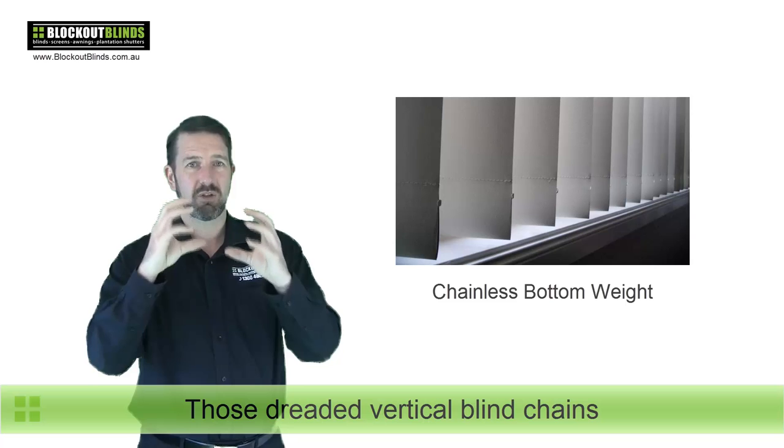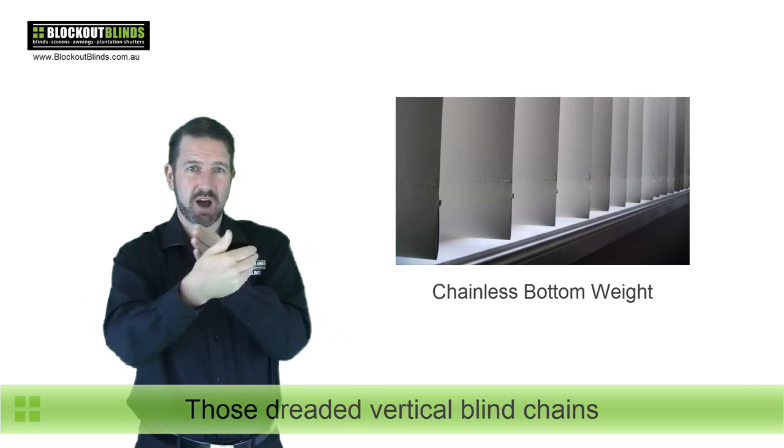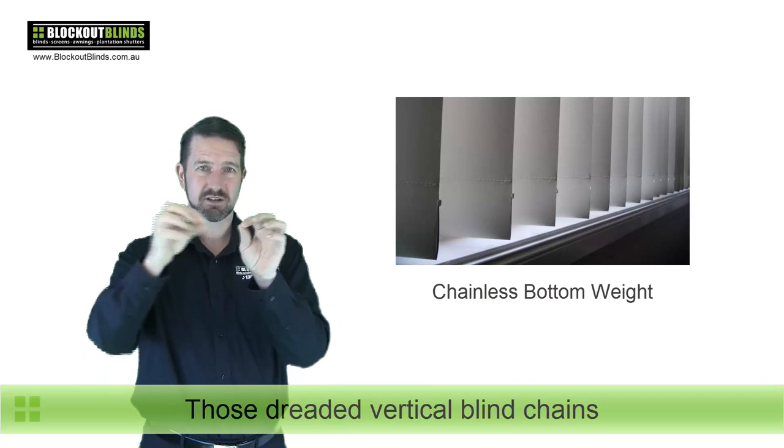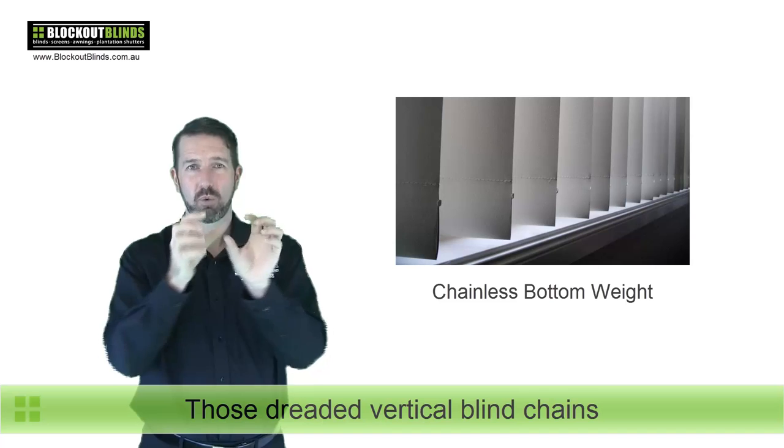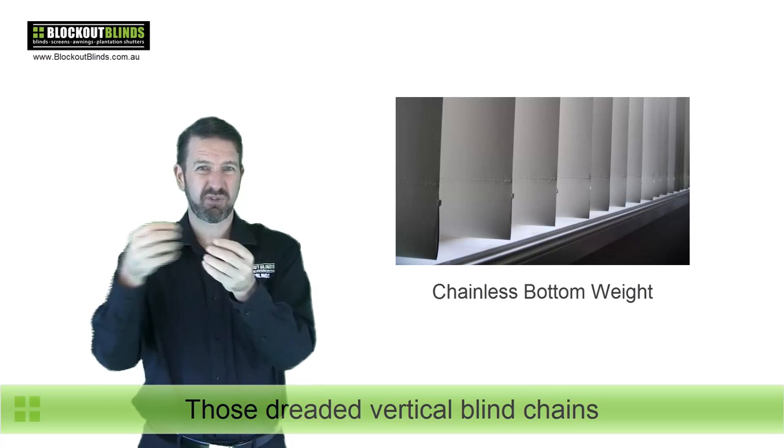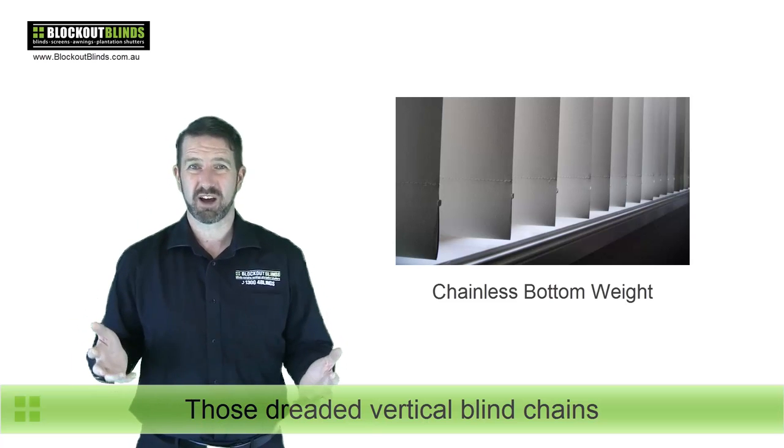With the chains on the weights, because they're linked up with the chains, the weight can't move left or right out of the pocket that it's in. Whereas these weights, because there's no chains, sometimes the weight that's inside the pocket can start to move left or right and sort of fall out of the louver, which is not really ideal.